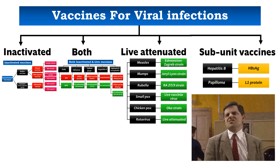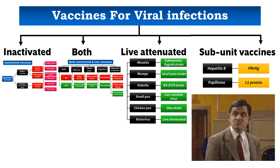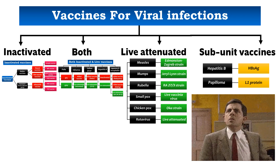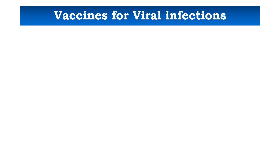We will zoom right in and check out the individual viral vaccines. Vaccines in general are available as live vaccines, killed vaccines, toxoids, conjugates, and more recently subunit vaccines, DNA and mRNA vaccines. But for viral infections, if we can remember four different groups, that's more than enough. We'll first discuss three groups and talk about the fourth group later.